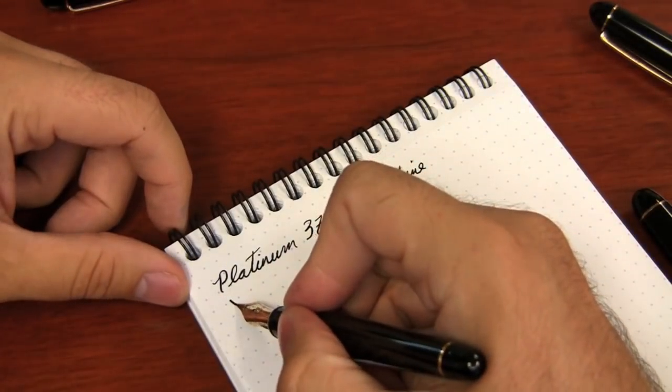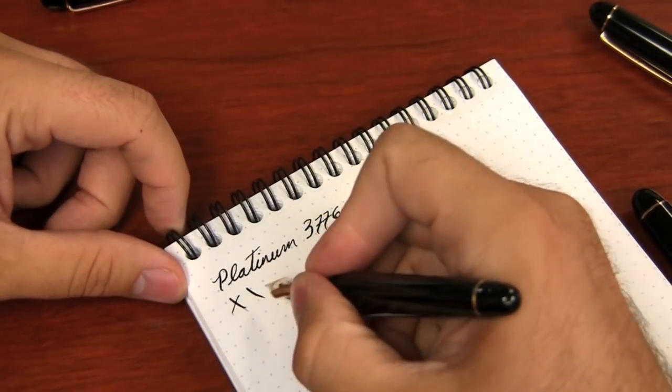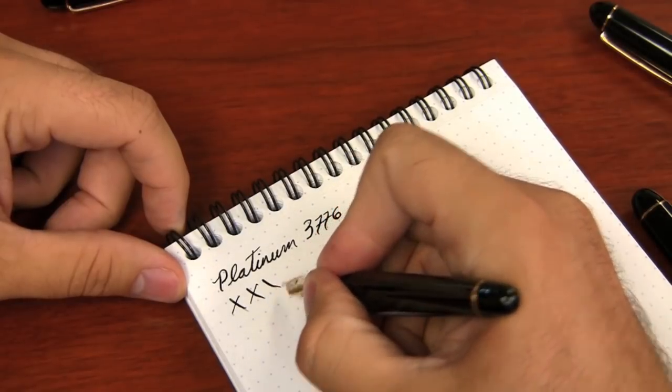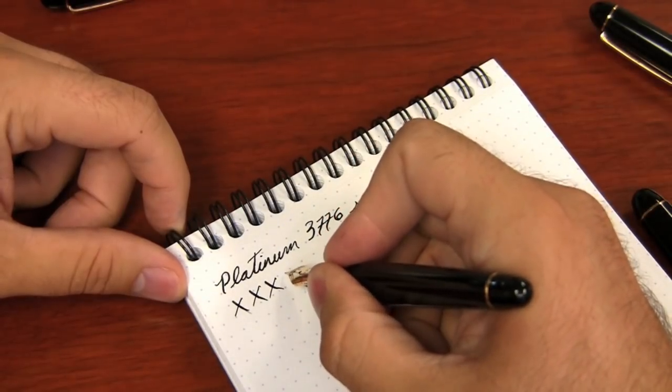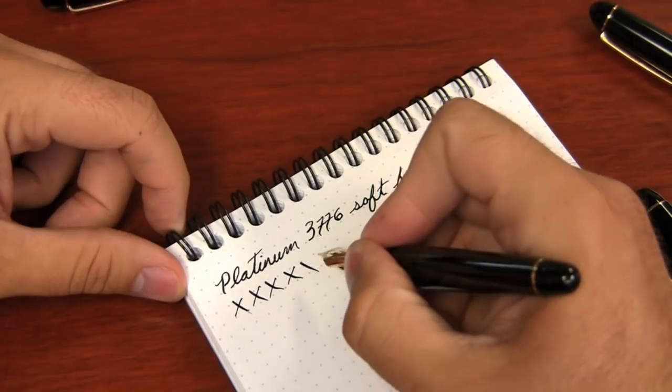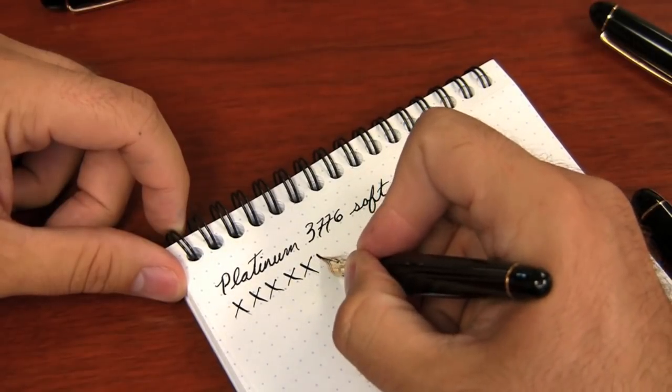An artist would be able to show this off a little better than me, but hopefully you can just get the idea. Okay, and I'll give a little, some X's and O's. So when you flex it, it brings it from about a fine to probably a broad. That's where I would classify it. I would say it flexes from about a fine to a broad.